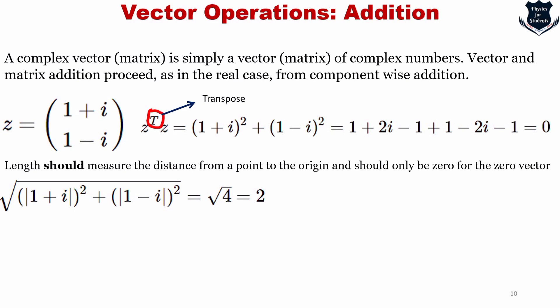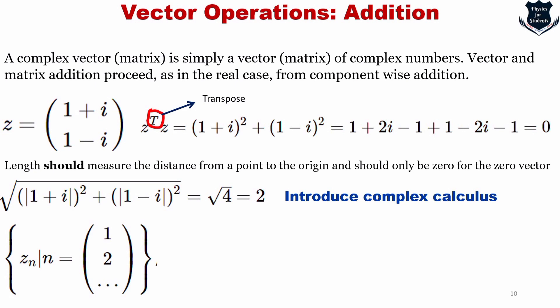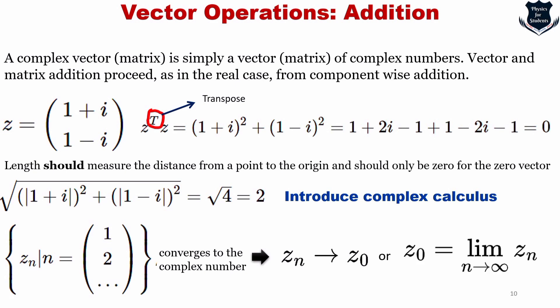The notion of magnitude also gives us a way to define limits, and hence we can introduce something called complex calculus. For a sequence of complex numbers, if z_n tends to z_0 we can set limits. This is a fascinating extension — if we introduce a series and complex calculus, it opens up further mathematical structures.